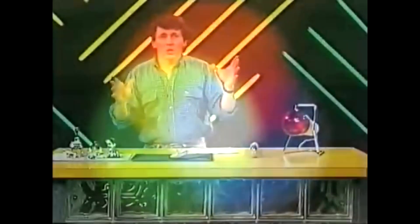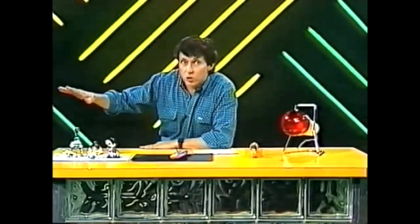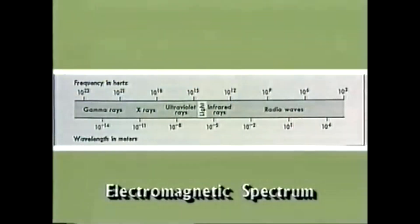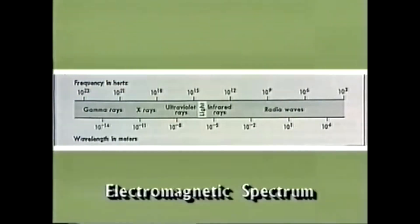Well, white light and its constituent colours — that's just part of a whole range of waves called the electromagnetic spectrum. It includes the waves that we can see, the ones right in the centre, and also a lot that we can't see.